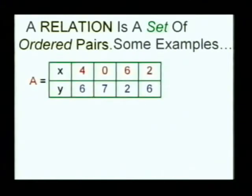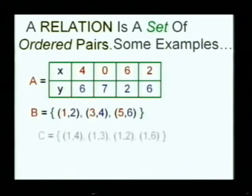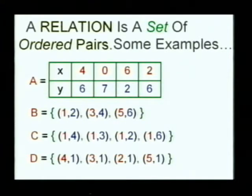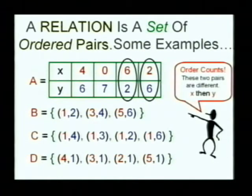Here are some examples — these are all relations. In relation A, we have a bunch of pairs: 4 is paired with 6, 0 is paired with 7, 6 is paired with 2, and 2 is paired with 6. In relation B, I have three pairs: the set of the pairs (1,2), (3,4), and (5,6). I want you to remember that order counts — these are ordered pairs. So the pair (6,2) is different from the pair (2,6).